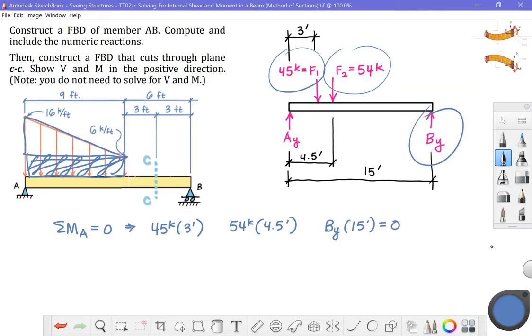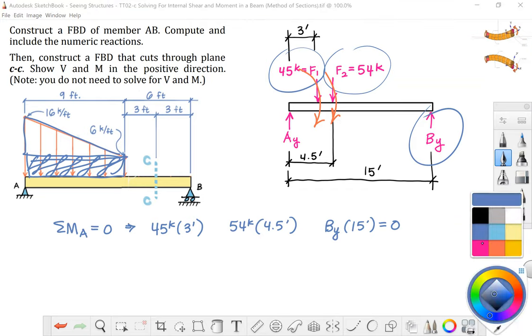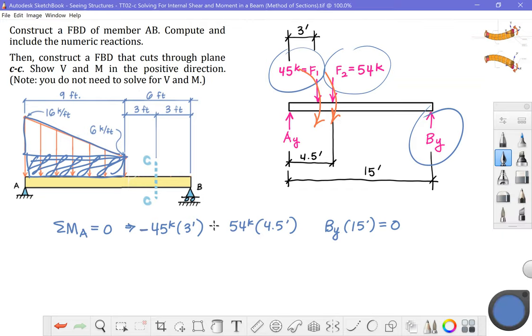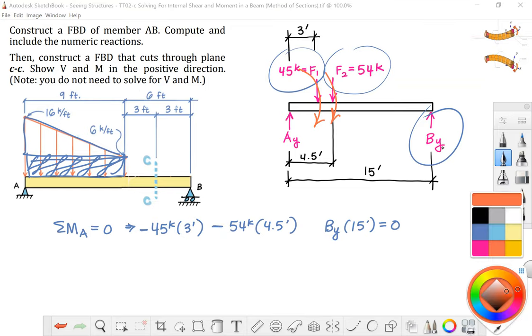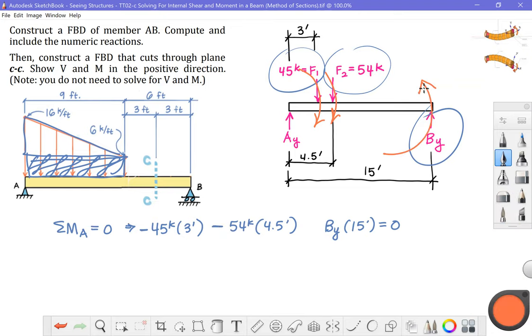F sub one and F sub two tend to rotate the body clockwise about A. Therefore, those two terms will get negative signs. B sub y tends to rotate the body counterclockwise about A. That way we know that that term gets a positive sign. Plug that into your calculator and you will conclude that B sub y is equal to 25.2 kips.